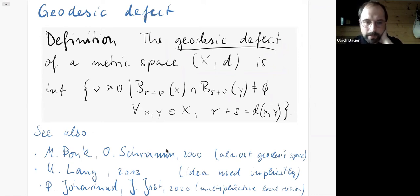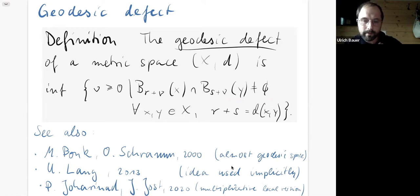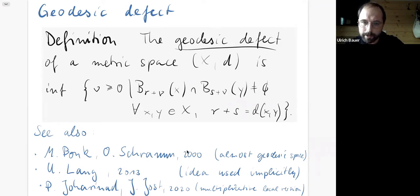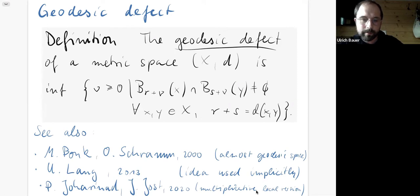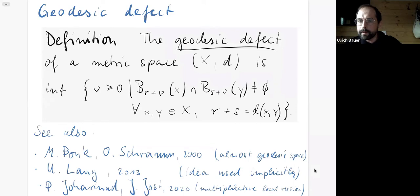We stumbled on this idea by reading a paper by Urs Lang, who used it implicitly in a proof for a special case. In a referee review, we were also told this definition appeared in a paper by Bonk and Schramm under the name 'almost geodesic space.' There's also a recent paper by Joost using a local and multiplicative version of this condition. So these ideas surface in various places in the literature.